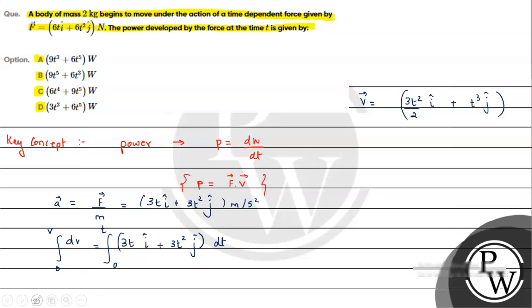So finally we can take the dot product. Therefore, power developed will be F̅·v̅. We have the total value of force equal to (3t²/2 î + t³ĵ + 6t²ĵ) into velocity, dot product. î·î = 1, rest of the combinations are 0.